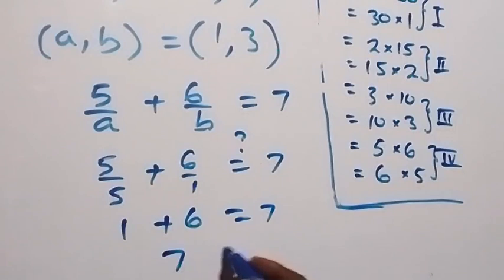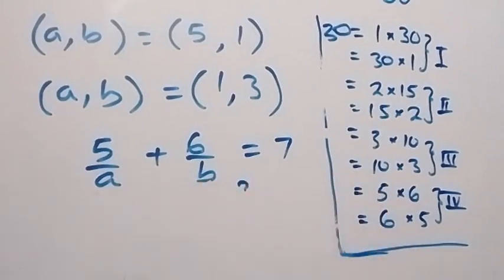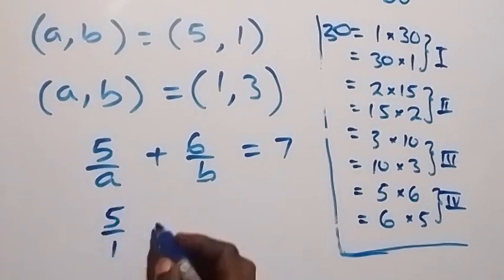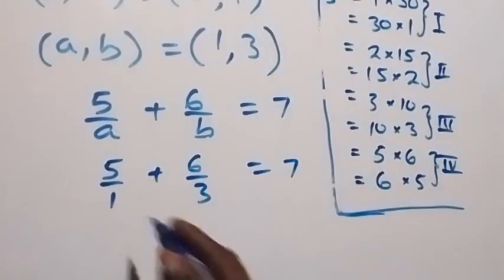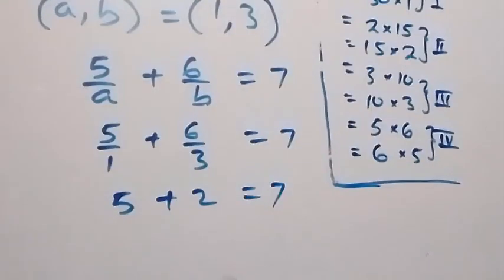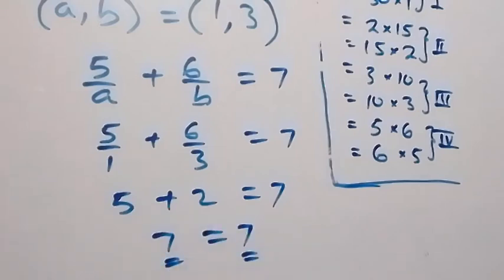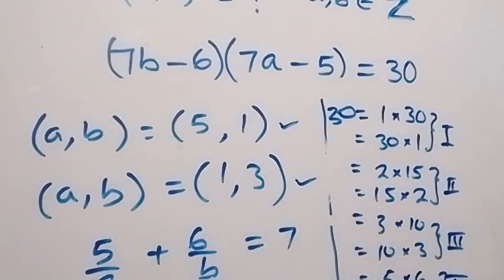That gives 1 plus 6 equals 7 — left hand side equals right hand side. Also testing with (1, 3): 5 over 1 plus 6 over 3 equals 5 plus 2 equals 7, and 7 equals 7, so left hand side equals right hand side. Therefore, the integer solutions for this problem are (5, 1) and (1, 3). Thank you for watching, please subscribe to my channel.